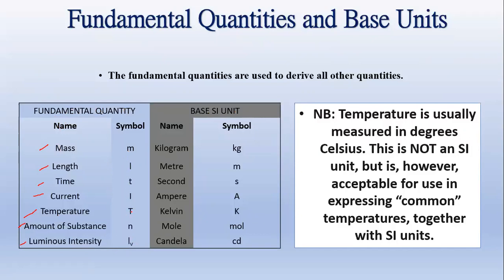The symbols use a combination of capital and lowercase letters. The symbol for mass is capital M, and it is measured in kilograms — symbol lowercase k, lowercase g. The symbol for length is lowercase l. Note: this is a lowercase l, not a capital I. The casing of the letters must be written accurately, so when writing it you would write it in cursive.